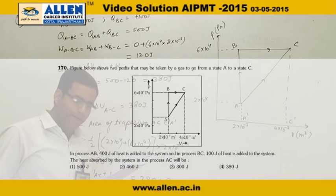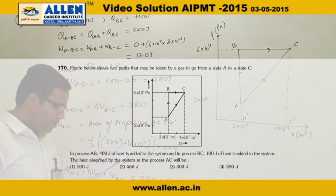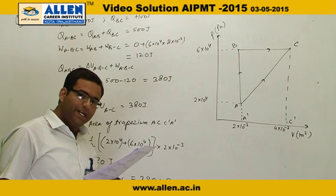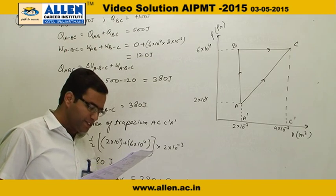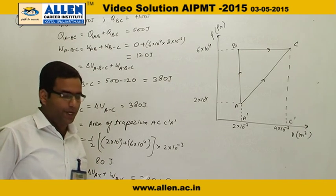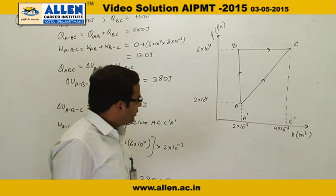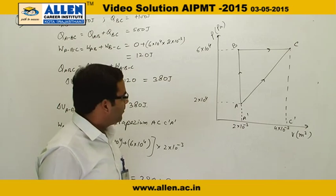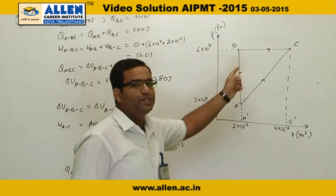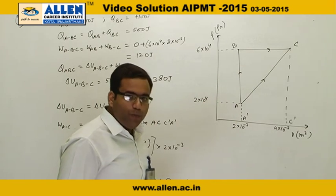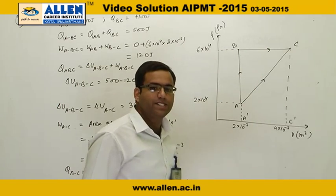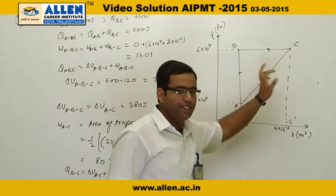In question number 170, the figure below shows two paths that may be taken by a gas to go from state A to state C. On this PV diagram, we can see the gas can be taken from state A to state C via two paths. The first path is ABC, and the second path is AC.